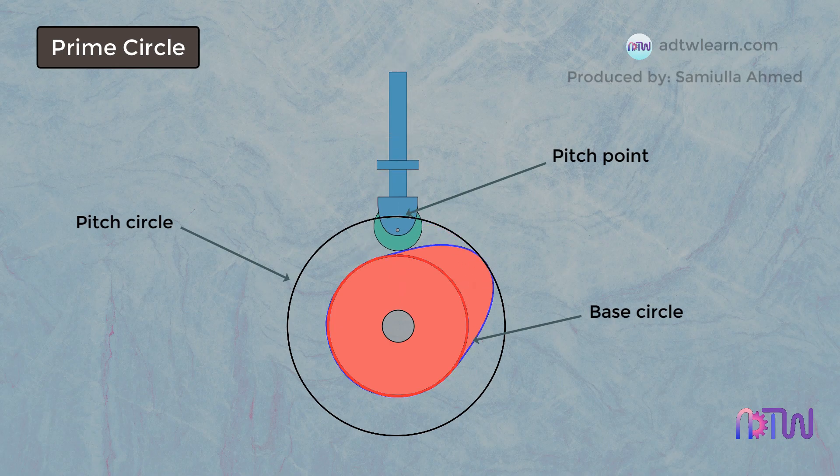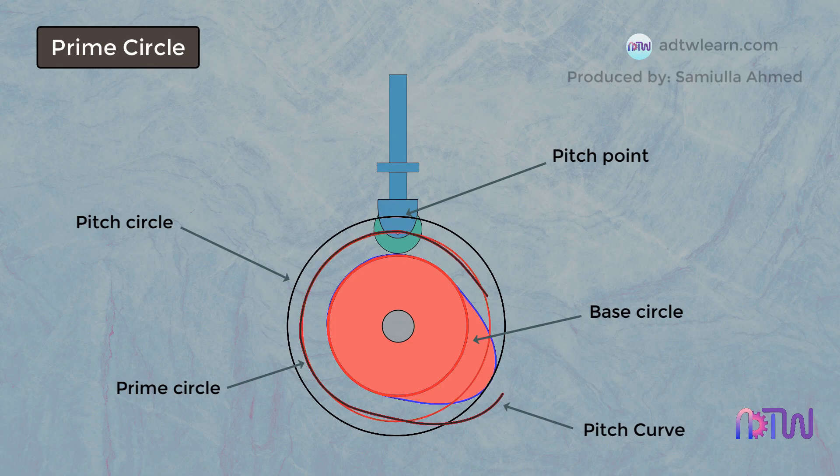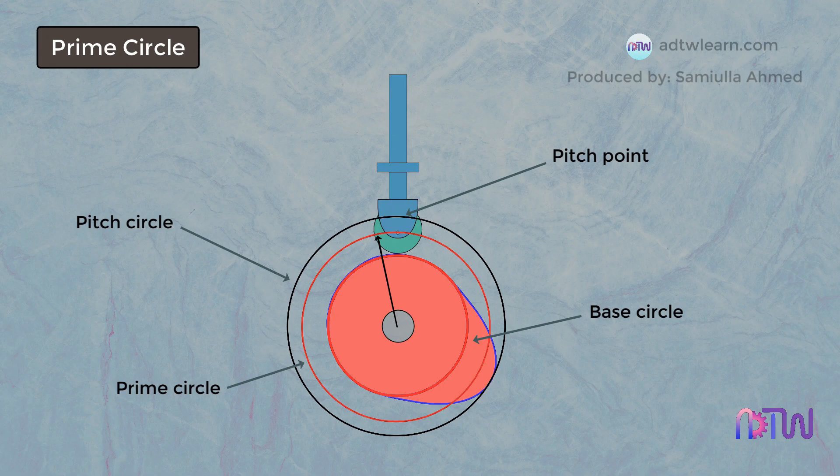Prime Circle. The prime circle is the smallest circle that can be drawn from the center of the cam and is tangential to the pitch curve. We can see that the radius of the prime circle is the sum of the radius of the base circle and the radius of the roller follower.